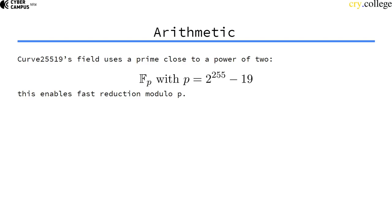And one of the reasons why Curve25519 is so fast is that it uses a prime for its prime field that is close to a power of two, which enables very fast reduction.